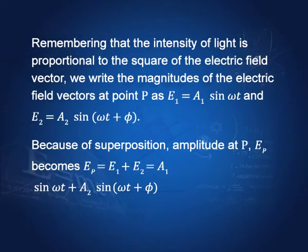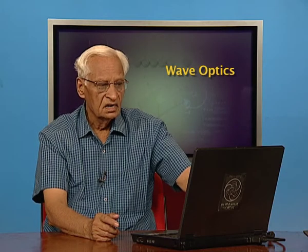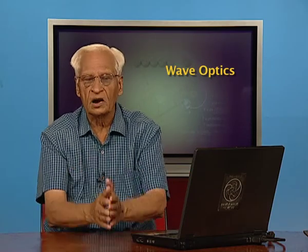The wave from one slit has electric field E1 = A1·sin(ωt), and from the other slit E2 = A2·sin(ωt + φ), where φ is the constant phase difference between the two. Because of superposition, the amplitude at point P is E1 + E2 = A1·sin(ωt) + A2·sin(ωt + φ). To find Ep we need some trigonometry, which we have done when compounding two simple harmonic waves.